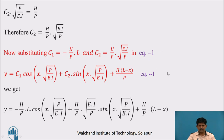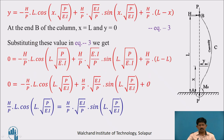Substituting C₁ = −HL/P and C₂ = (H/P)√(EI/P) into equation 1, we get: Y = −(HL/P) cos(X√(P/EI)) + (H/P)√(EI/P) sin(X√(P/EI)) + (H/P)(L − X). Now applying the second end condition: Y = 0 at X = L.